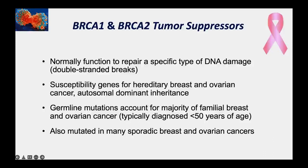Mutations in BRCA1 and BRCA2 are responsible for familial breast and ovarian cancer, with individuals typically diagnosed under 50. These genes are also mutated in many sporadic breast and ovarian cancers. Additionally, other genes that work with BRCA1 and BRCA2 in the same pathway are often mutated when BRCA1 or BRCA2 are not—if any one of them is disrupted, it can have a similar effect.